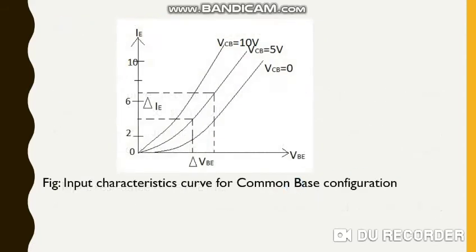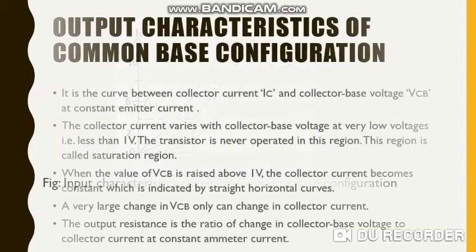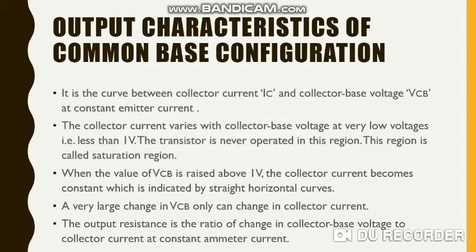So this is the graph — you can copy it if you need it. Now let's move into the output characteristics of common base configuration. It is the curve between collector current IC and collector base voltage VCB at constant emitter current. Earlier in input characteristics the parameter kept constant was VCB — a voltage — but now in this case it is current. The emitter current is made constant here.